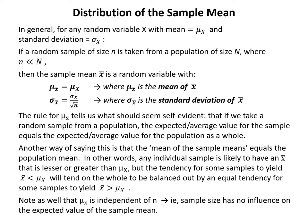In general, for any random variable x with mean mu_x and standard deviation sigma_x, if a random sample of size n is taken from a population of size N, where n is much smaller than N, then the sample mean x-bar is a random variable with the following parameters: mu_x̄ equals mu_x, called the mean of x-bar, and sigma_x̄ equals sigma_x divided by the square root of n, called the standard deviation of x-bar.